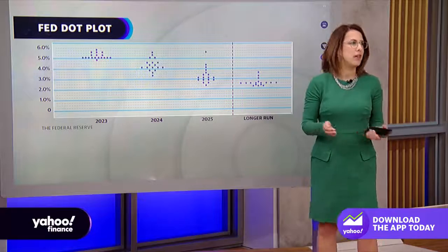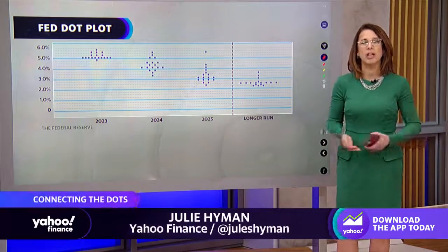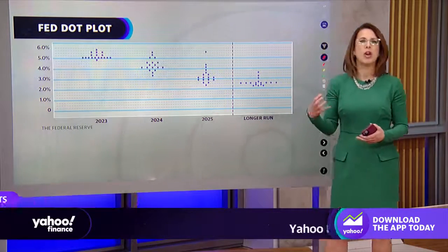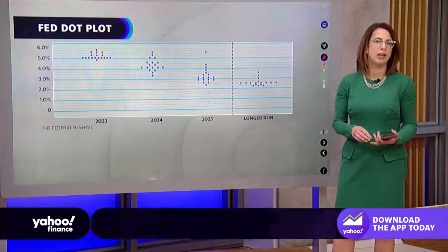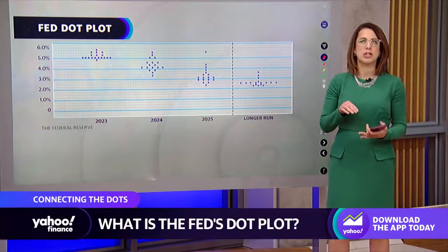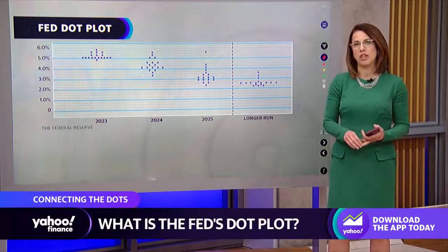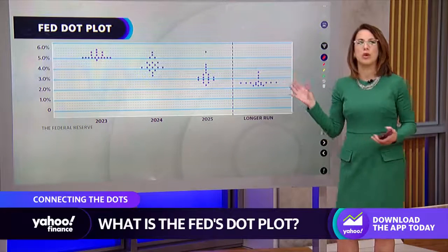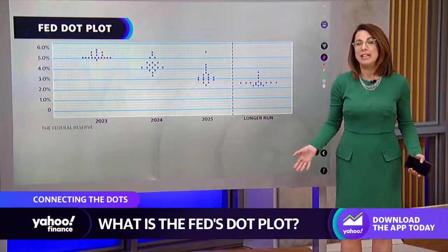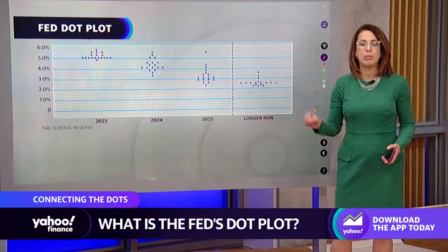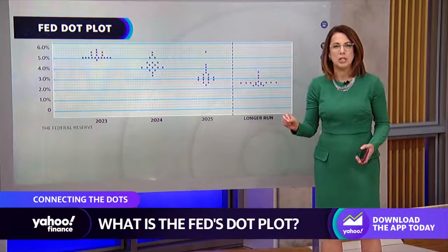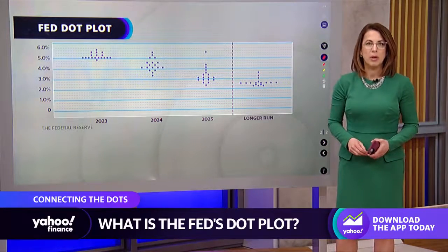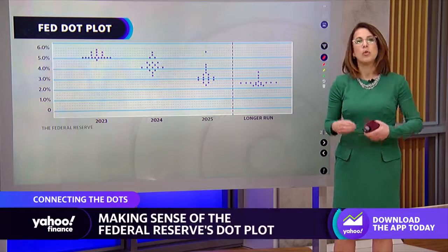This is the current Fed dot plot — what they came out with today. They also call it the Summary of Economic Projections, and it includes other stuff like their GDP projections as well as inflation projections. And all of it comes down to the so-called dot plot. The dot plot is simply the individual Fed members' projections of where interest rates will end up by a given point in time.